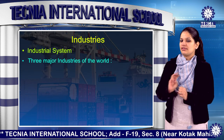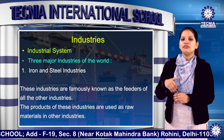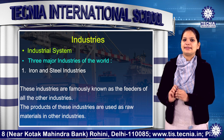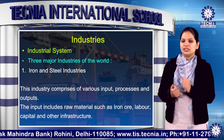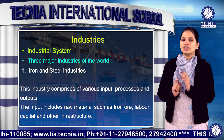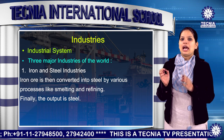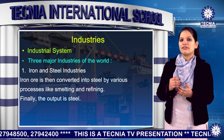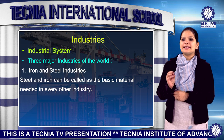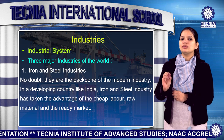Now I will tell you about three major industries of the world. First is iron and steel industries, famously known as the feeders of all other industries. The products of these industries are used as raw materials in other industries. The input includes raw material such as iron ore, labour, capital and other infrastructure. Iron ore is then converted into steel by various processes like smelting and refining. Finally, the output is steel. Steel and iron are the basic materials needed in every other industry — they are the backbone of modern industries.